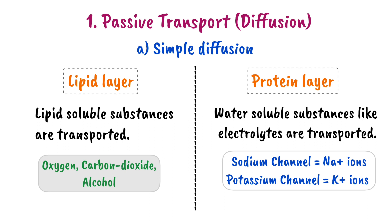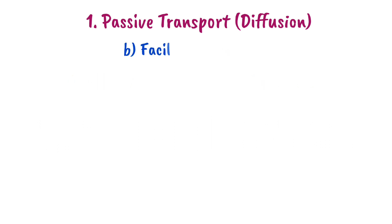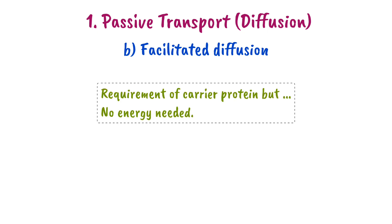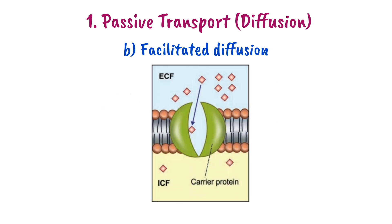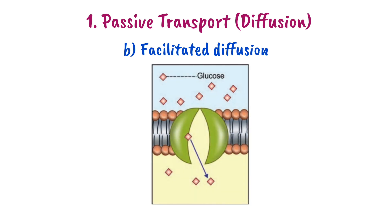The second type of passive transport is Facilitated Diffusion. Facilitated Diffusion is a type of passive diffusion — it requires some carrier proteins but not energy. For example, glucose transport uses a transporter protein that allows glucose to enter or exit the cell.